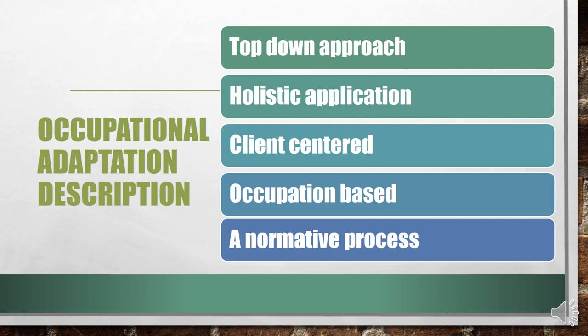This is a top-down approach — really important to understand. Most of our occupational therapy interventions are going to utilize that, where we look at the whole person. We fill out that occupational profile to understand everything. We don't just look at the diagnosis and focus only on fixing it — that's a bottom-up approach. We look at who the person is, what stage of their life they're in, what setting and milestones they've reached, their education, social life, home life, physical setting, and then their current capabilities including client factors and diagnosis.